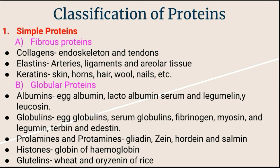Next are prolamines and protamines. Common prolamines are gliadin in wheat and zein in corn and maize, as well as hordein from barley. Salmine is a protamine found in salmon sperms.